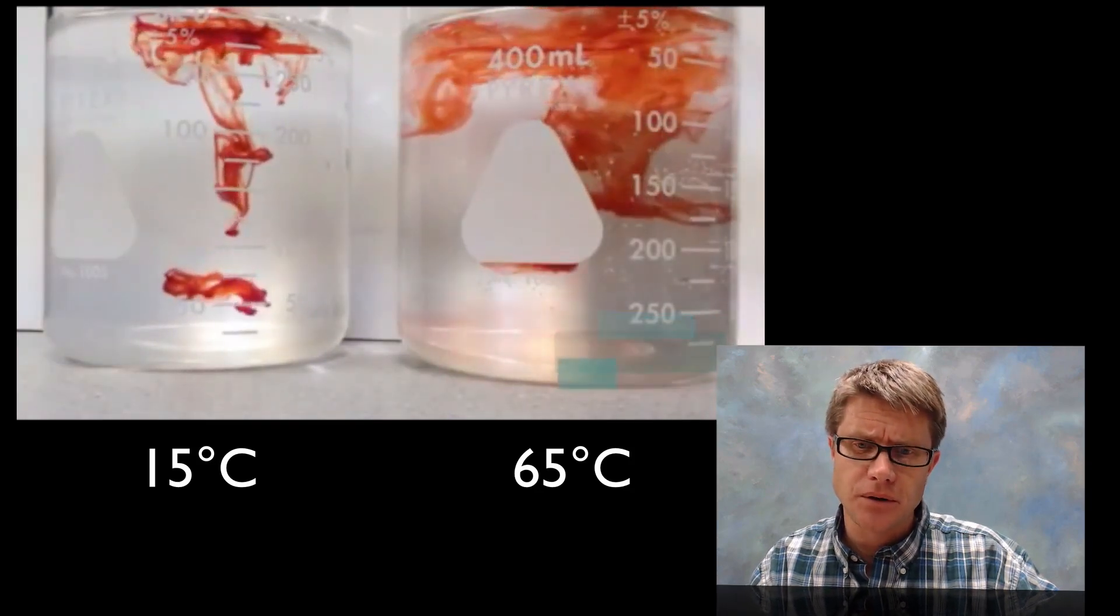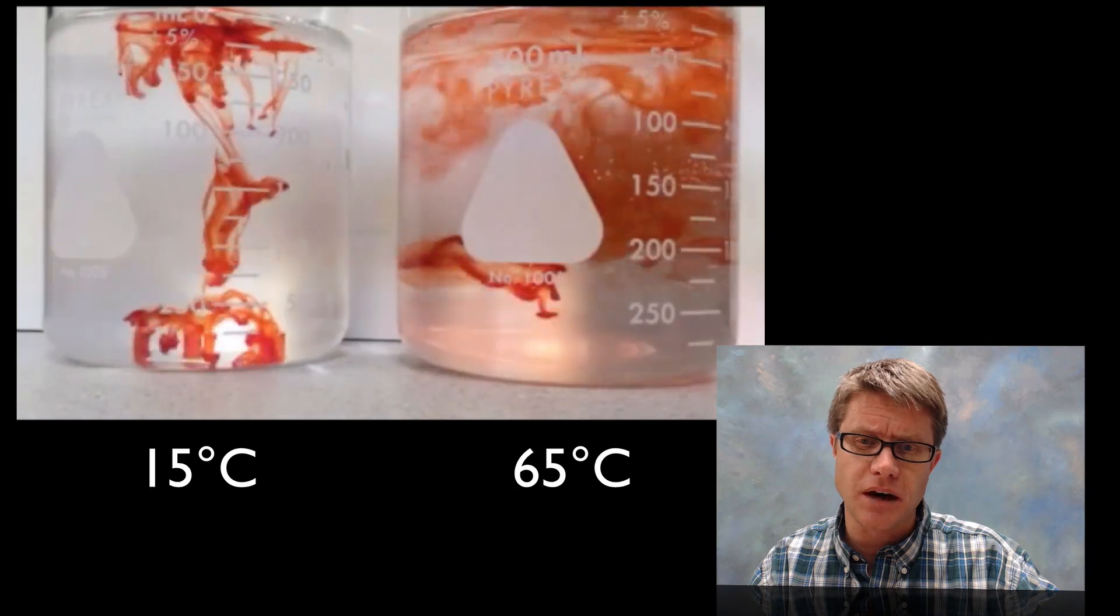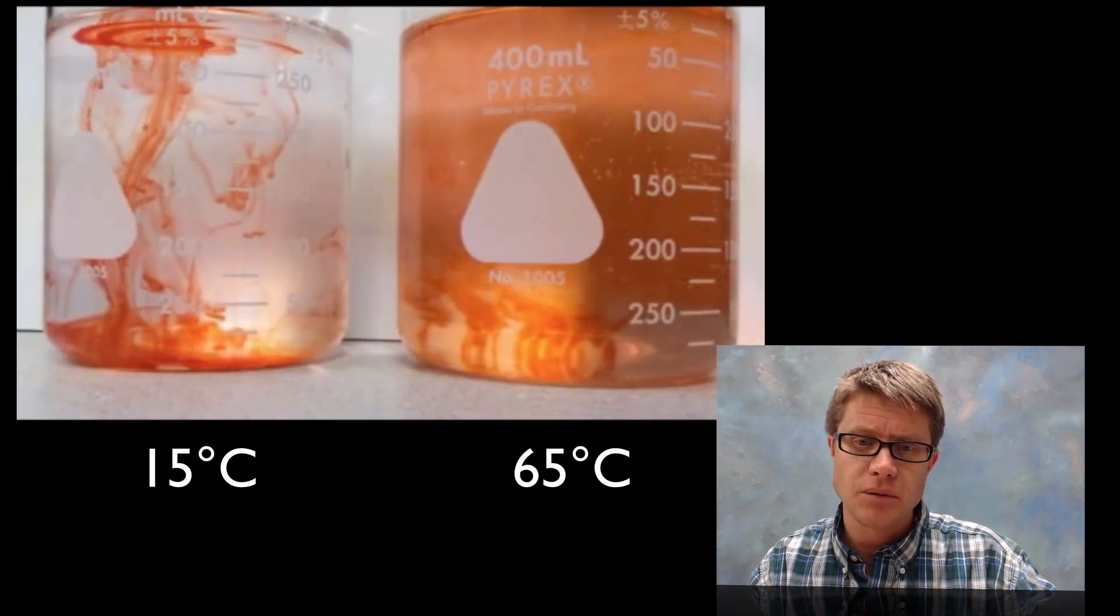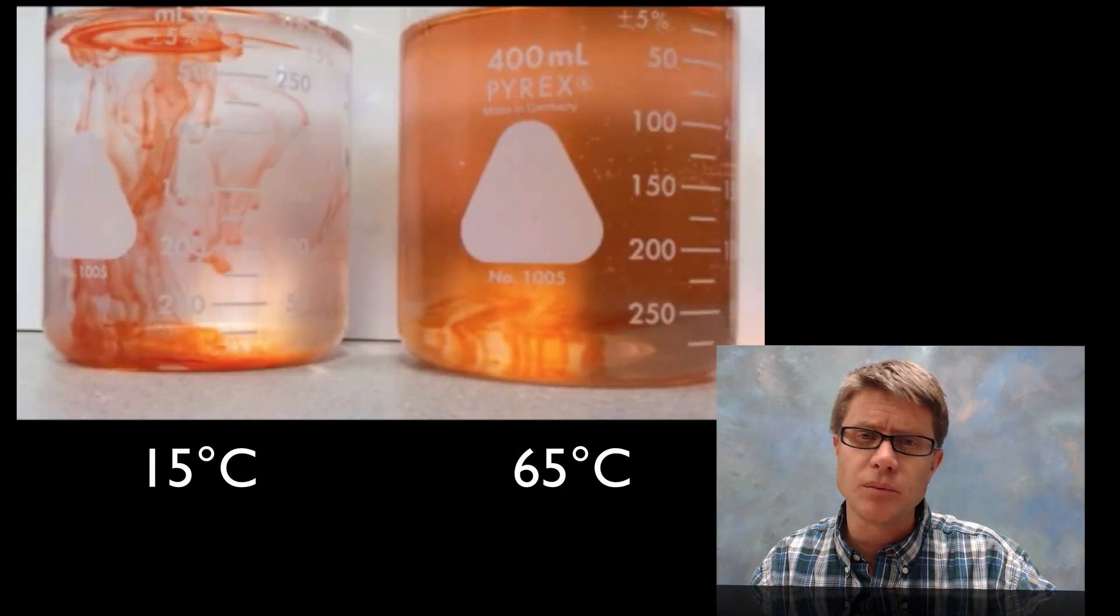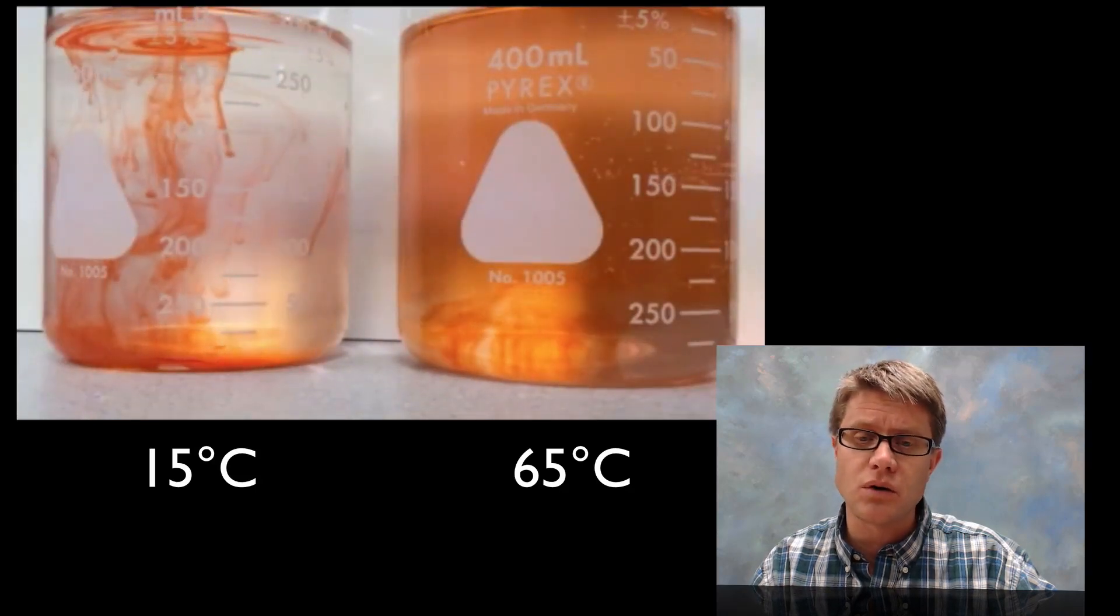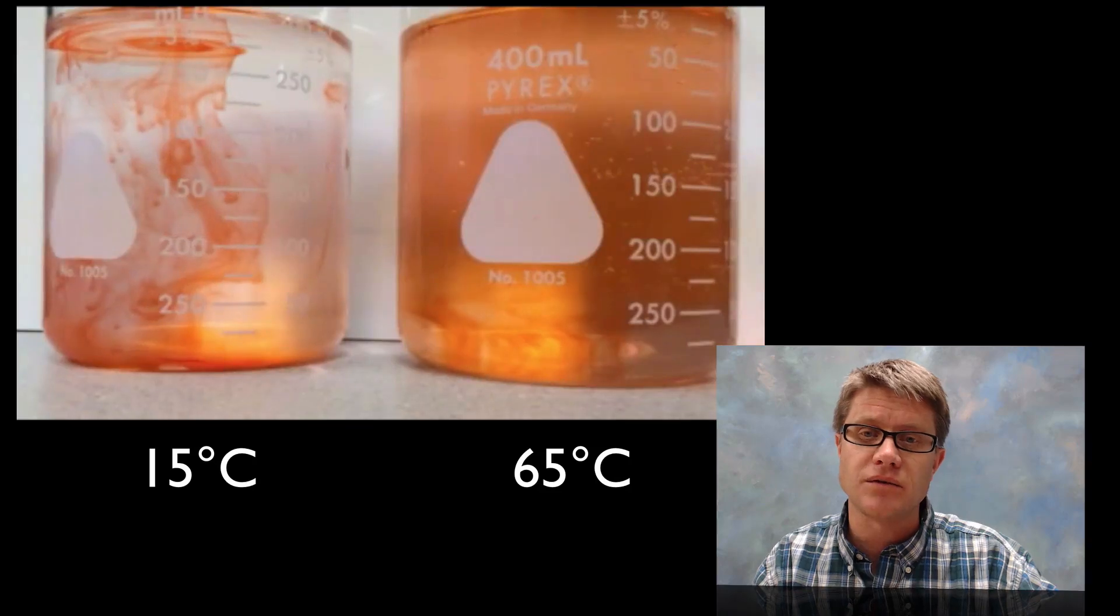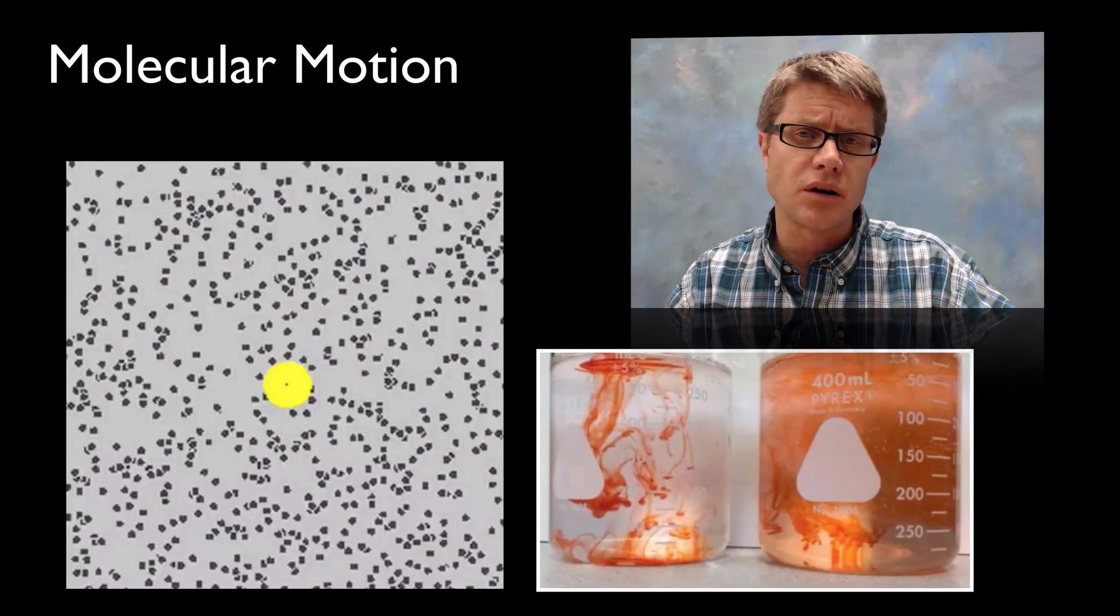So you can see that the food coloring is spreading apart more at the 65 degrees. I speed up the video right here so it's about four times. And so we can see that in the cold it's really not moving apart very much at all. But in the warm we're seeing this huge amount of movement of those molecules. And we can even see some little convection currents going on. And so why does that occur?